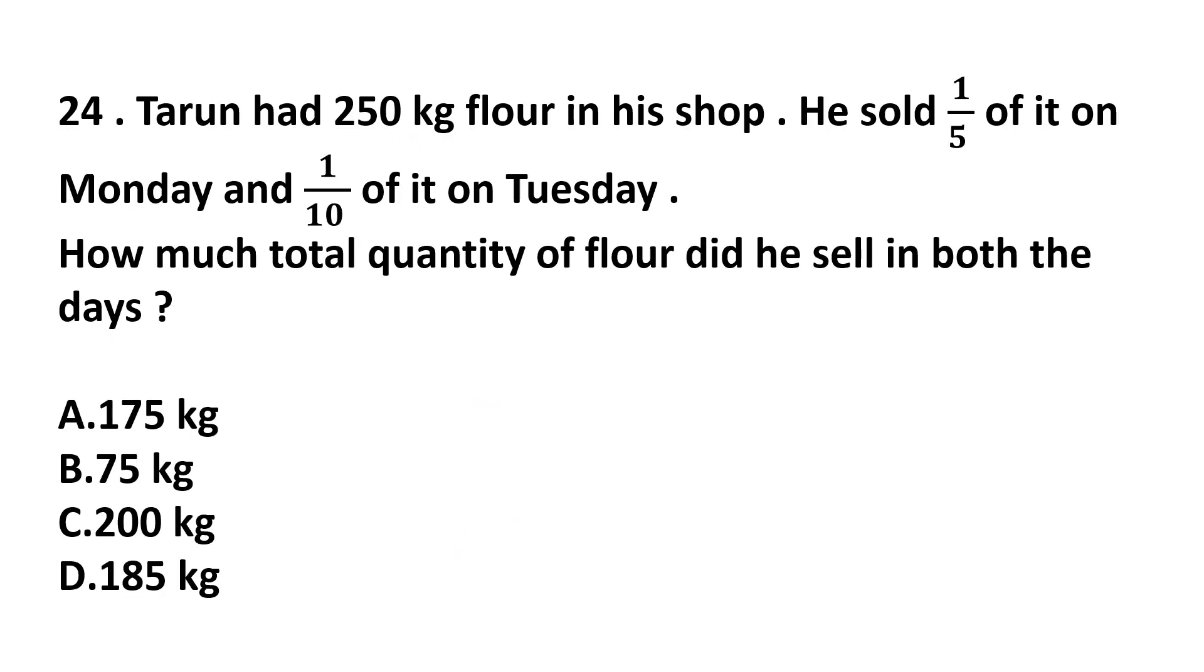Question number 24. Tarun had 250 kg flour in his shop. He sold 1/5 of it on Monday and 1/10 of it on Tuesday. How much total quantity of flour did he sell in both the days? First, he had 250 kg flour and he sold 1/5 of it on Monday. So 1/5 of 250 is 50 kg. And next day, he sold 1/10. So 250 multiplied by 1/10 is 25. So how much total quantity he sold? 50 plus 25 equals 75 kg. Answer is option B.